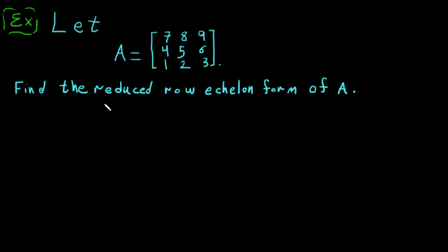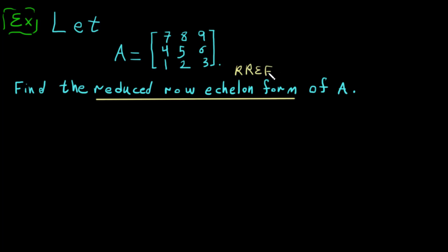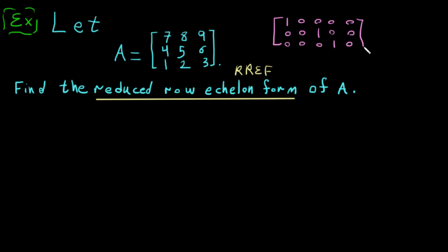Let's do an example for Reduced Row Echelon Form — sometimes written as RREF. For RREF, if you have a matrix like [1 0 0 0 / 0 0 1 0 / 0 0 0 ...], the leading one goes below, then go right until you find one, go below and go right until you find one. You stop when there is no row below. It's like a snake game.